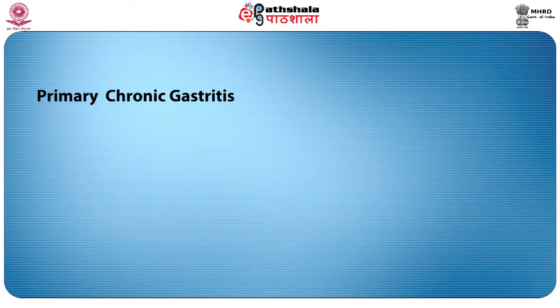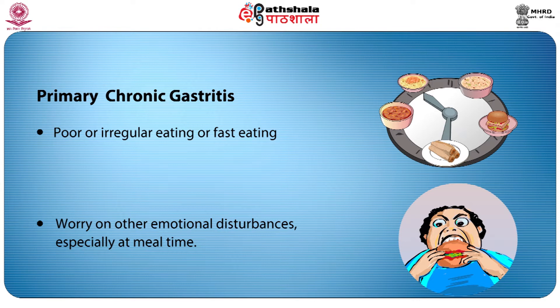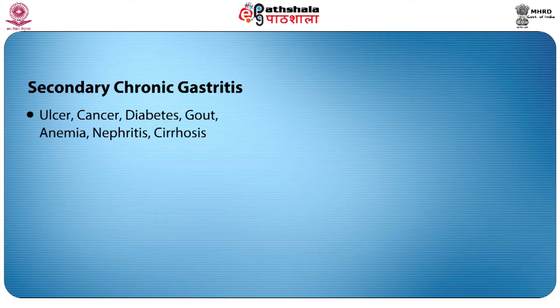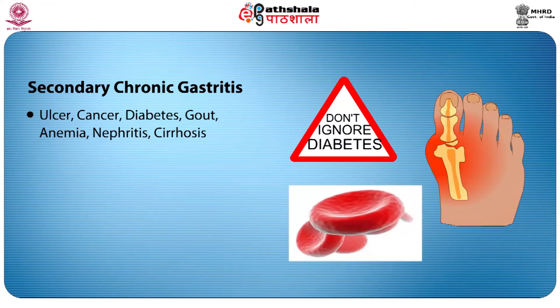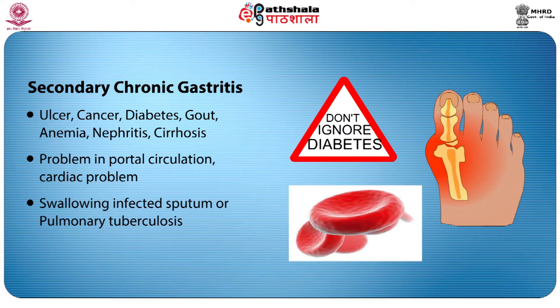Chronic gastritis may be primary or secondary. Primary chronic gastritis may develop when there is poor or irregular eating, fast eating, or worry and mental disturbance at meal time. Secondary chronic gastritis may occur if an individual is affected by other existing diseases like ulcer, cancer, diabetes, gout, anemia, nephritis, cirrhosis, problems in portal circulation, cardiac problems, swallowing infected sputum, or pulmonary tuberculosis. Thus inflammation is formed due to other diseases in secondary chronic gastritis.